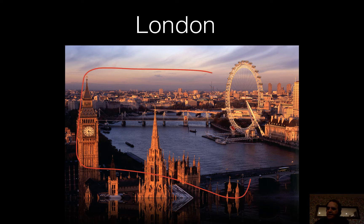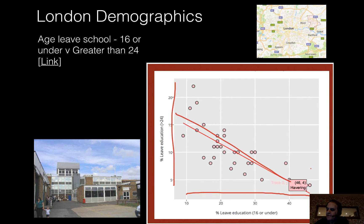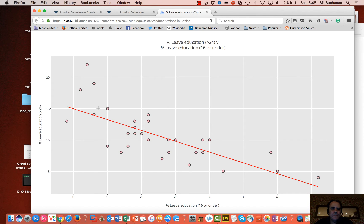London varies greatly as we move between different boroughs and wards. If we look at kids who leave school at 16 or under and plot that against those who leave at greater than 24, typically staying on for MSc, PhD and so on, we see a demographic where the more deprived areas have a relatively high proportion leaving at 16 or under, compared to the less deprived, more affluent areas where kids generally leave school older.